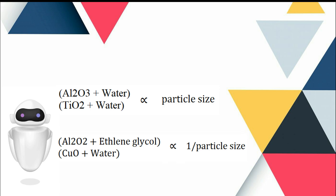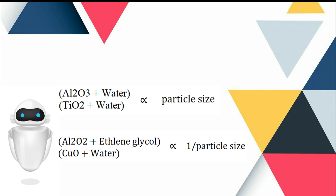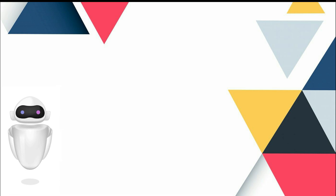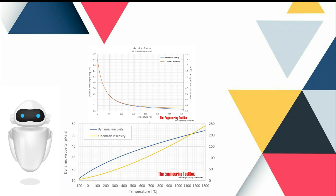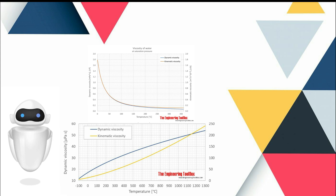For nanofluid of AL2O3 plus ethylene glycol and CuO plus water, decrease in nanoparticle size increases nanofluids viscosity. Next, we look at the effect of temperature on viscosity. Ethylene glycol or water-based CuO, AL2O3, and SiO2 demonstrate that viscosity decreases exponentially with rise in temperature. In contradiction to the above, water-based carbon nanotubes nanofluids showed an increasing trend in viscosity with respect to temperature.